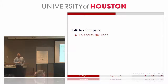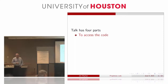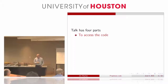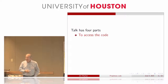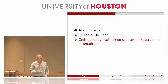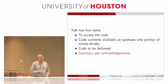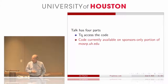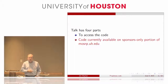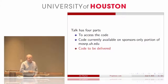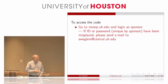Starting with accessing the code: you go to mosrt.uh.edu and log in as a corporate sponsor. Each corporate sponsor has a unique ID and password. If your ID or password has been misplaced, please send an email to Professor Weglein, and he will have it reset. Once you log in, go to research, projects, and coding projects.